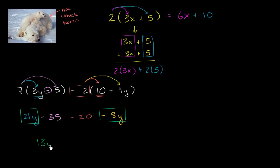So those are going to simplify to 13y's. And then I have negative 35 minus 20, and so that's just going to simplify to negative 55. So this whole thing simplified, using a little bit of the distributive property and combining similar or like terms, we got to 13y minus 55.